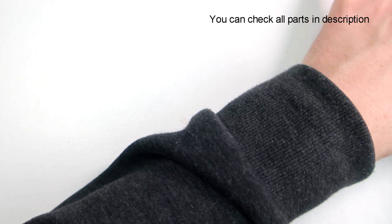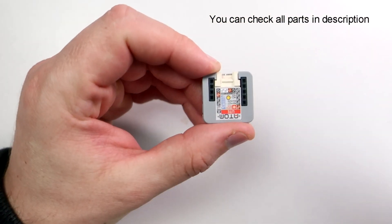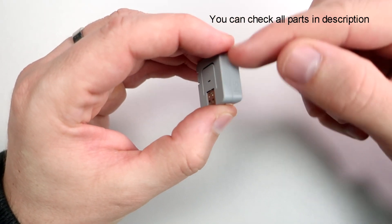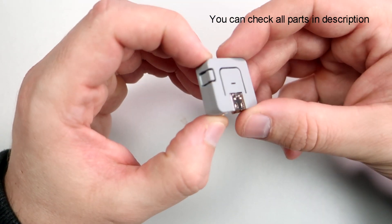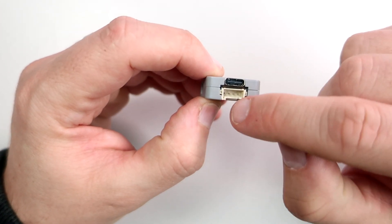So this is M5 Atom, the tiniest ESP32 development board I could find. It has this plastic case, so it has a little protection. Here is the USB-C port, and here is this Grove port.